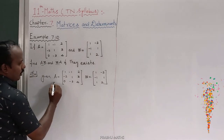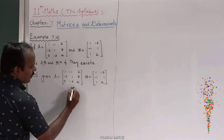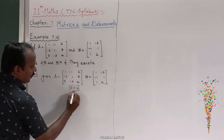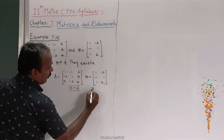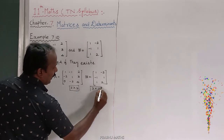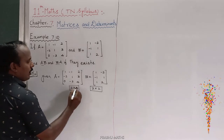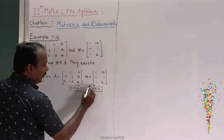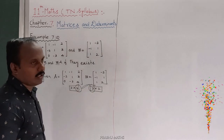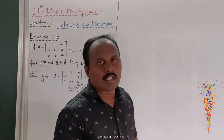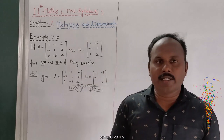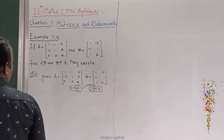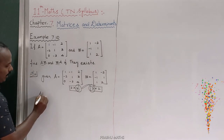So generally, the multiplication rule of matrix is: the order of the first matrix is 3 by 3, and the order of the second matrix is 3 by 2. The matrix multiplication rule is that the first matrix's columns must compulsorily equal the second matrix's rows for multiplication to be eligible.